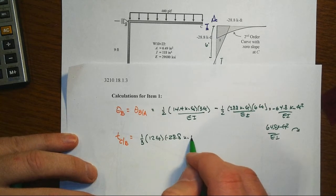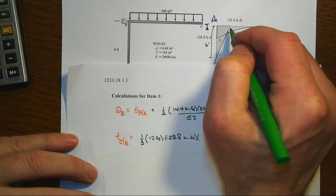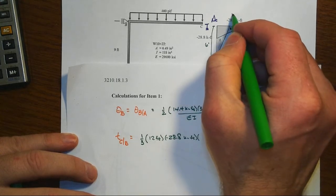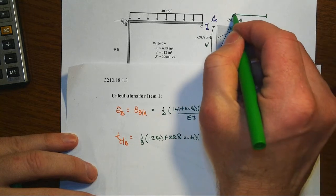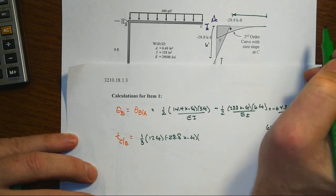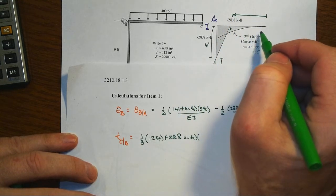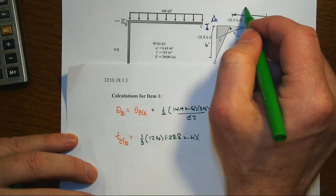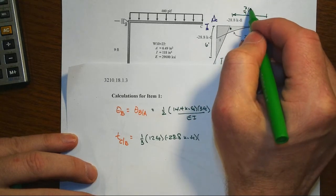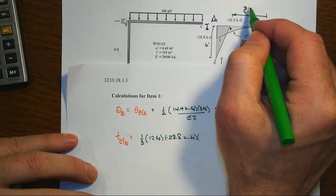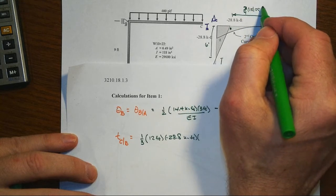and then the moment arm then is going to be with respect to the point of interest. So there's our little moment arm that we're going to deal with, and with the second order curve that has the vertex, we're at three quarters point, three quarters of 12, which equals 9 feet.